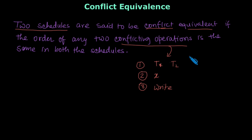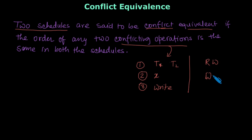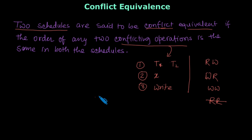So the conflicting operation pairs we have are: read-write, write-read, and write-write. Read and read is not conflicting.